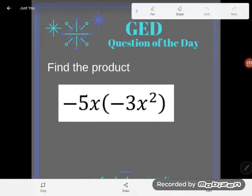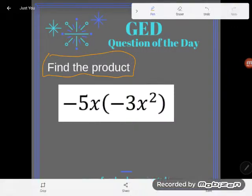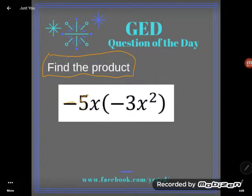Hey guys, it's GED Question of the Day. Today we've been asked to find the product, and product is just a word that means the answer when you multiply. I'd say you didn't even need that language to see this was a multiplication problem because if you take a look, it says -5x times -3x².